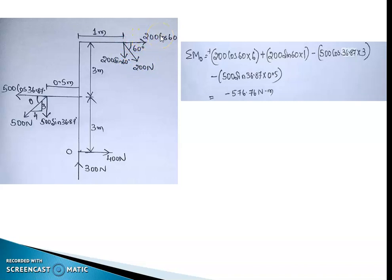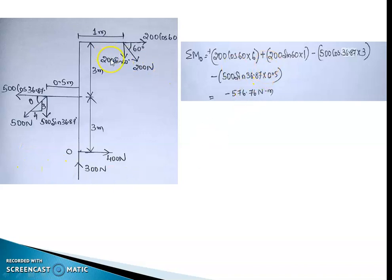Taking the 200 cos 60 component — it is a purely horizontal force — I need the perpendicular vertical distance between O and this point, which is 3 plus 3 equals 6 meters. So the moment is 200 cos 60 times 6, and it rotates in the clockwise direction about O. For 200 sin 60 — a pure vertical force — the perpendicular horizontal distance between O and the point is 1 meter. So the moment is 200 sin 60 times 1, also causing clockwise movement.